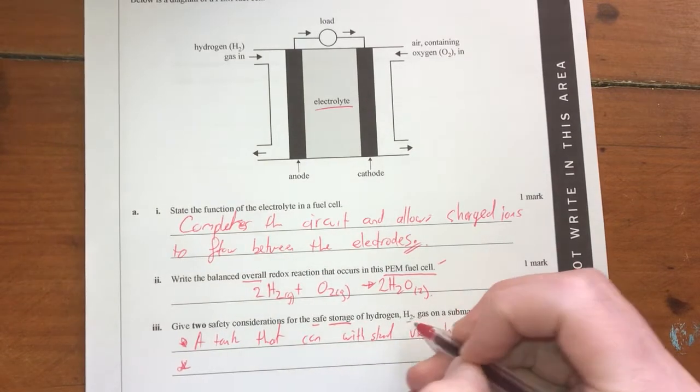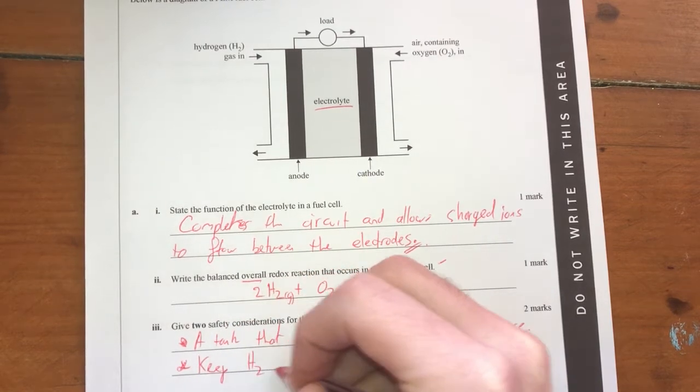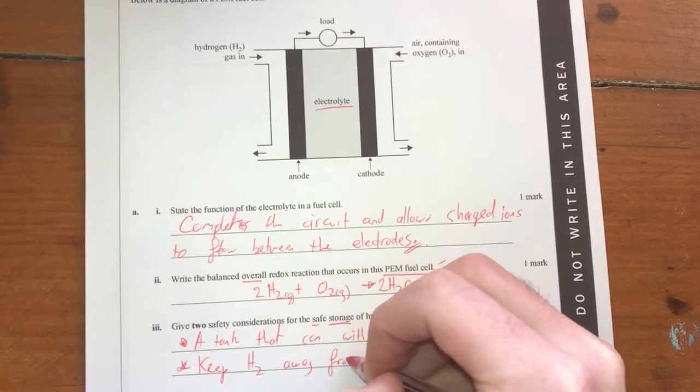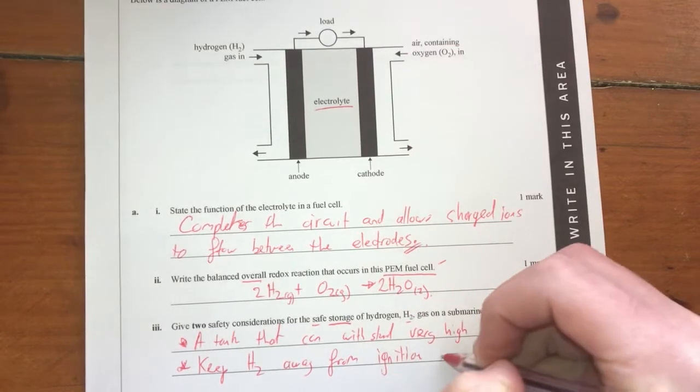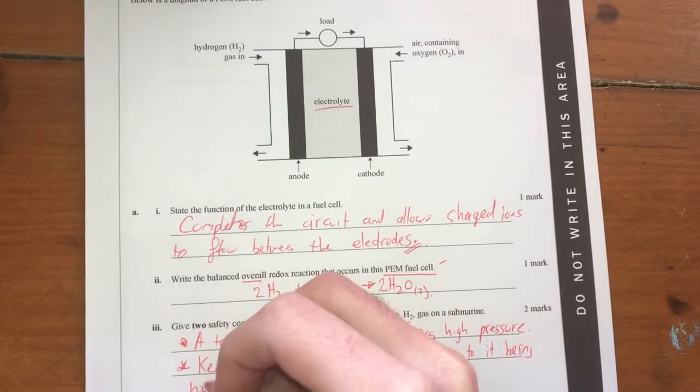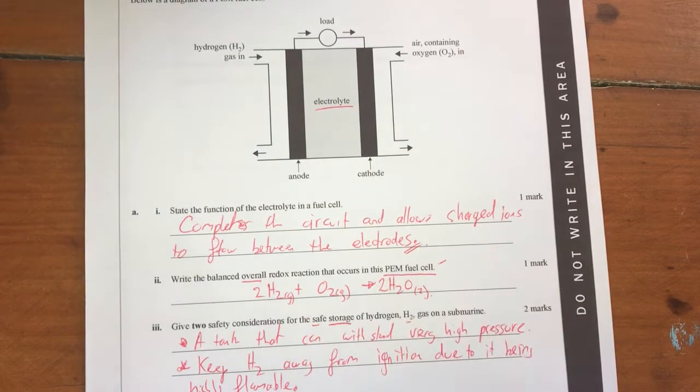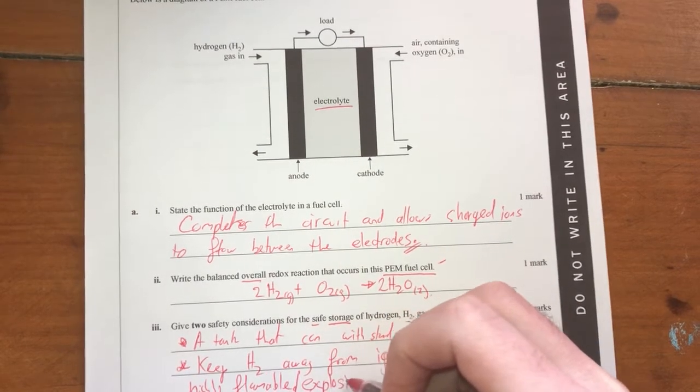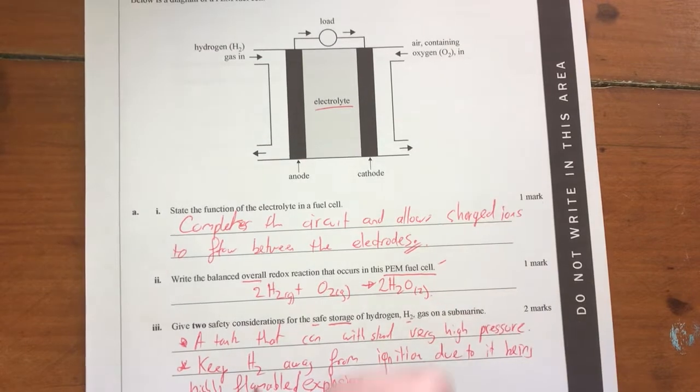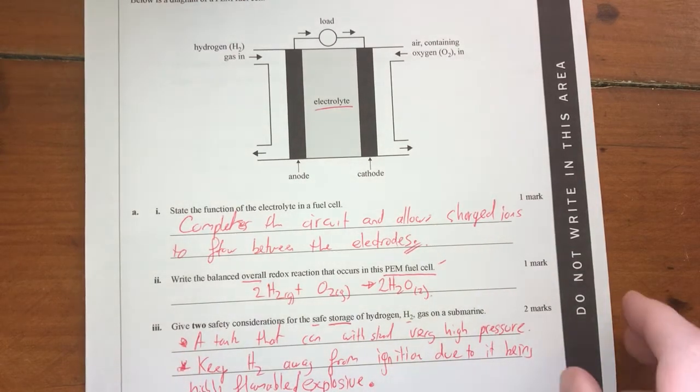it could explode and you don't want that happening on a submarine. The next thing you need to know is that hydrogen is highly flammable. You need to make sure keep the H2 away from ignition sources due to it being highly flammable. Alright, explosive slash explosive. I'll call it explosive. So they're the two go-to things for safety when you're talking about hydrogen, both the high pressure aspect and the fact that it's also flammable. So anytime you talk about hydrogen, make sure you include those two in your response and you should be fine.